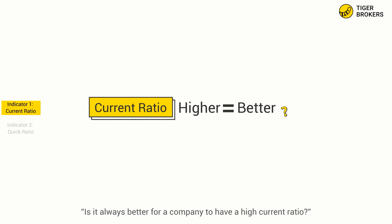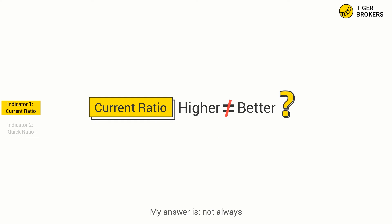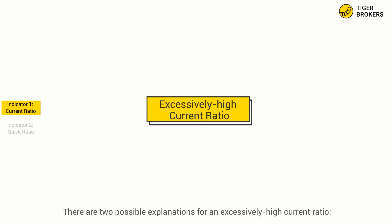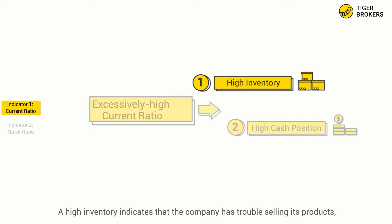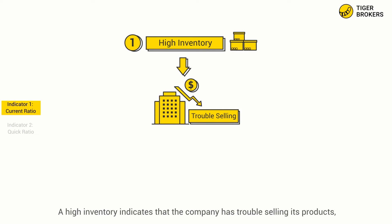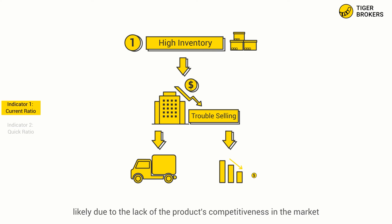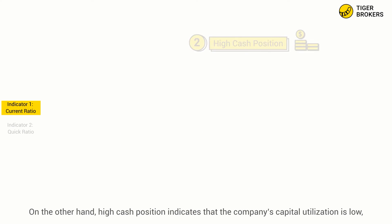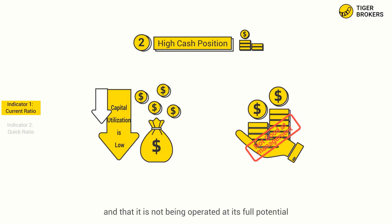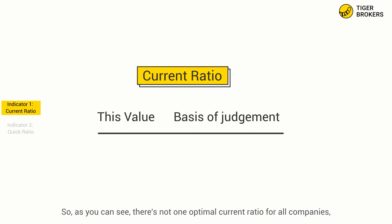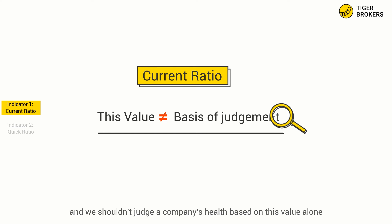Some of you might ask: is it always better for a company to have a higher current ratio? My answer is: not always. There are two possible explanations for an excessively high current ratio — high inventory or a high cash position. A high inventory indicates that a company has trouble selling its products, likely due to the lack of the product's competitiveness in the market. On the other hand, a high cash position indicates that a company's capital utilization is low and that it is not being operated at its full potential. So, as you can see, there is not one optimal current ratio for all companies, and we shouldn't judge a company's health based on its value alone.